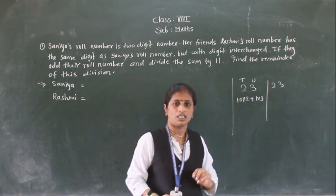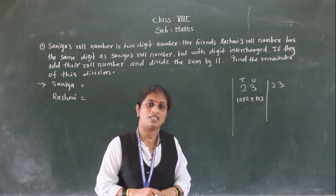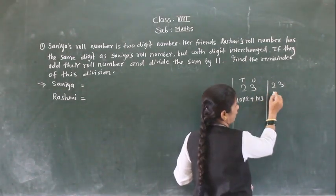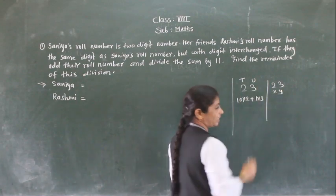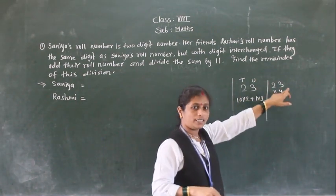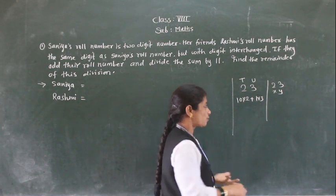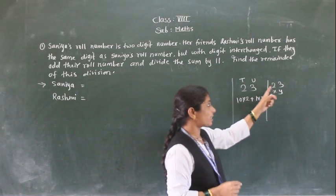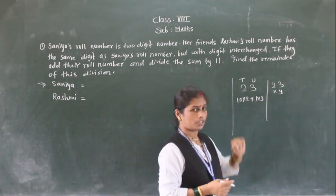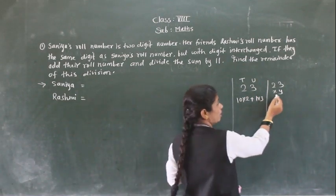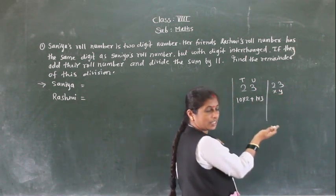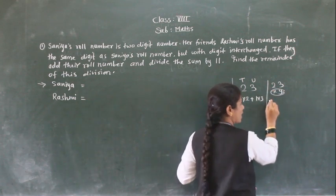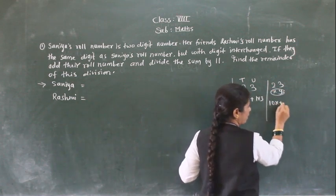But here another number is unknown, so when the unknown number is there, how do we take the two-digit number? We can take the digits as x and y. Like 2 and 3 are the digits. So how can we say that x and y is the number? We cannot write it as 'xy' because if there is no sign, multi-digit means no sign. So we can express this two-digit number as 10x plus y.